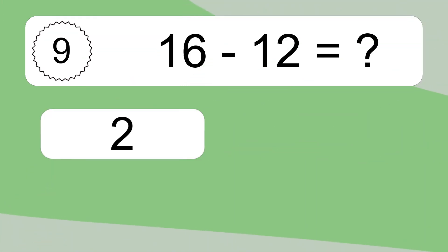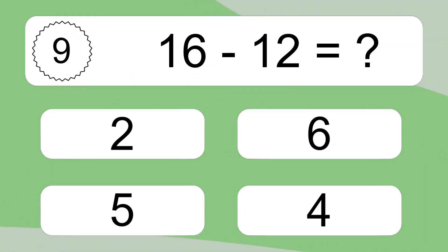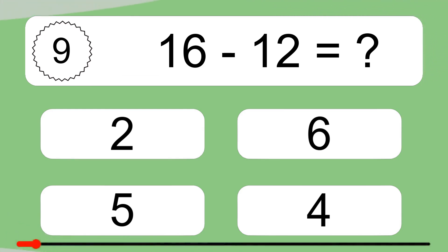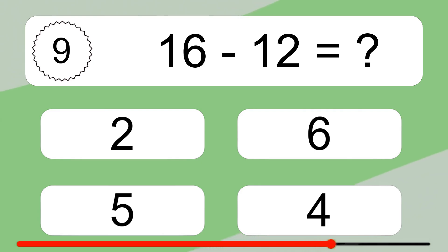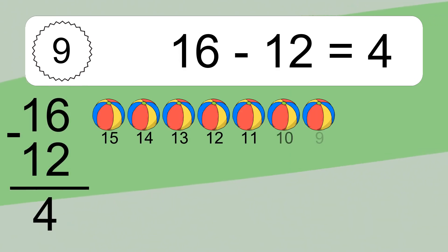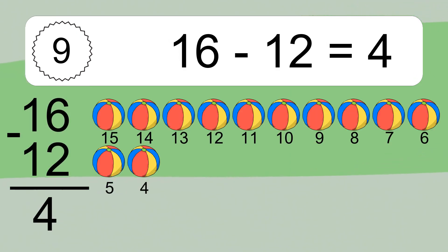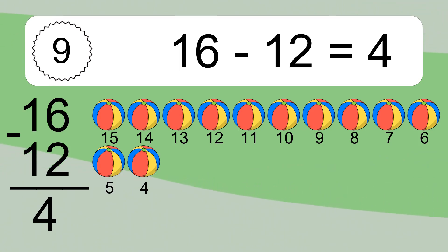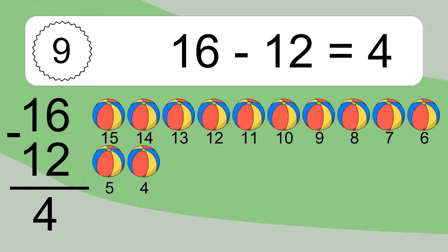16 minus 12 equals what? 16 minus 12 equals 4. Let's count it: 15, 14, 13, 12, 11, 10, 9, 8, 7, 6, 5, 4.